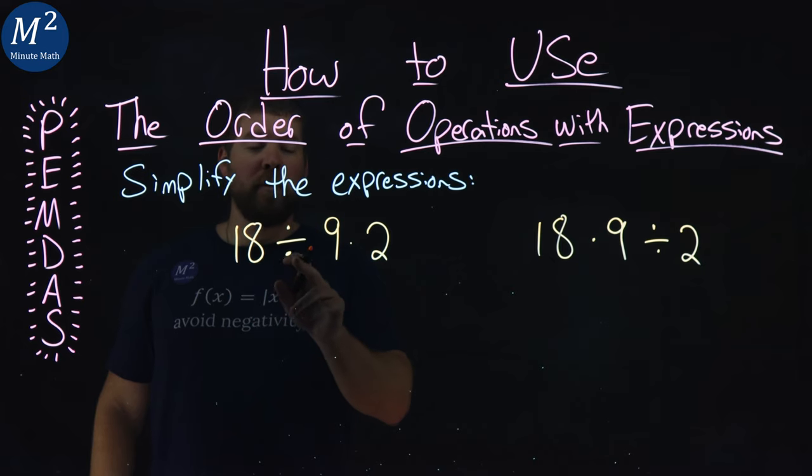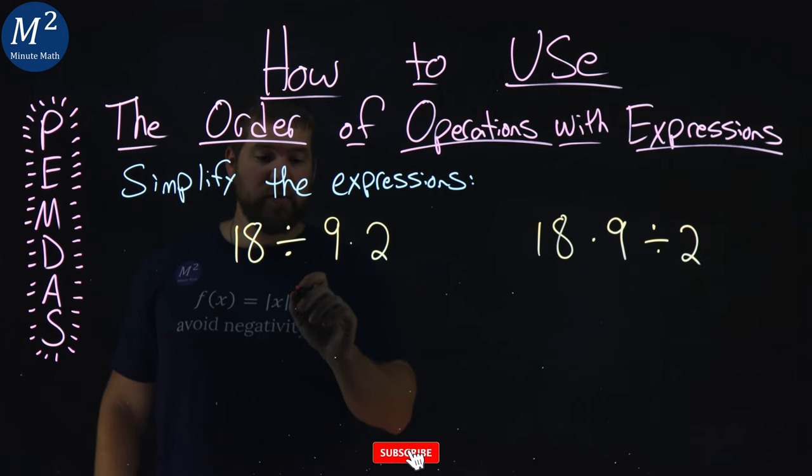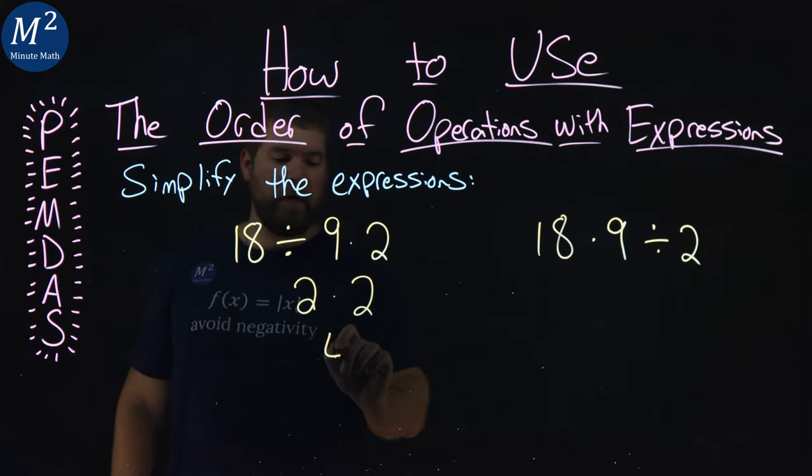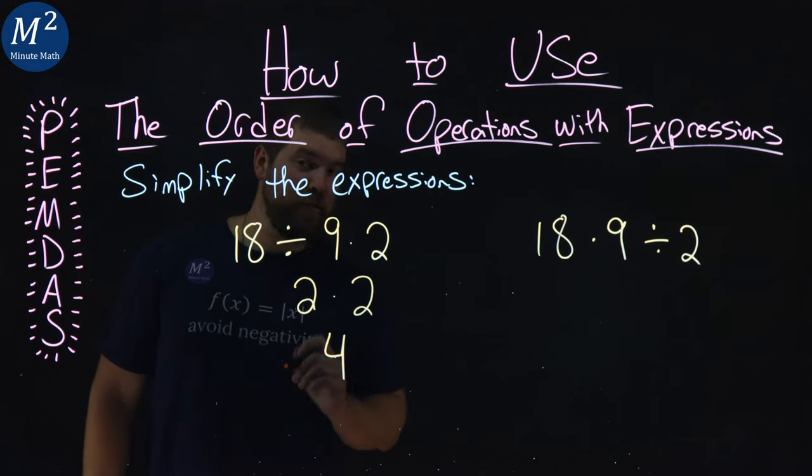18 divided by 9 is a 2. So we have 2 times 2 left. The only operation left to do is multiplication, which is then made it to 4.